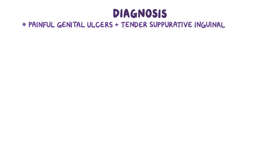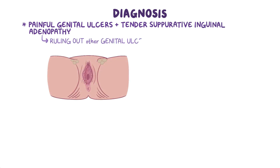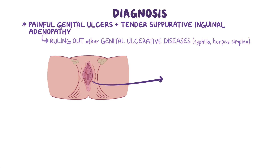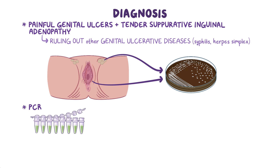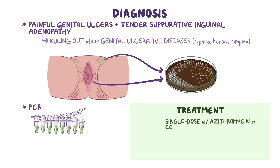Chancroid is usually diagnosed based on clinical findings — one or more painful genital ulcers with tender suppurative inguinal adenopathy — after ruling out other genital ulcerative diseases such as syphilis or herpes simplex virus infection. Haemophilus ducreyi can also be isolated from an ulcer or lymph node aspirate and grown in culture, but this is not commonly done in practice. It can also be identified through PCR, which identifies bacterial DNA, though this is also uncommon. Treatment uses single-dose therapy with azithromycin or ceftriaxone, or multiple-dose therapy with ciprofloxacin or erythromycin.